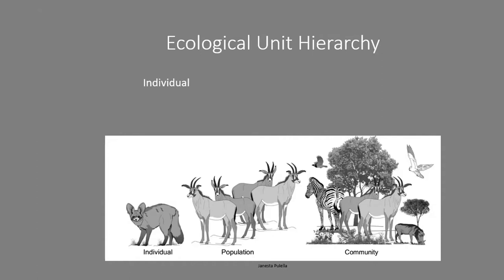From there we go on to a population — this is now all individuals of the same species within a particular area. So you may be talking about all the zebras within the Kruger National Park ecosystem or within the Masai Mara National Reserve. That is the population of common zebra within that area, but you're not talking about any other species yet.